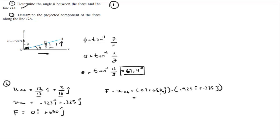0 times 0.923 is 0 and 650 times 0.385 is roughly 250. So that's the magnitude of the component of f going along line OA.